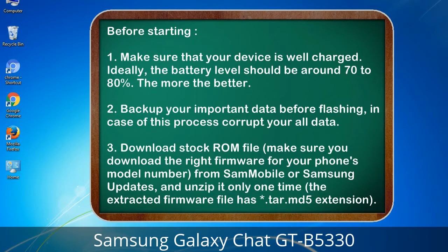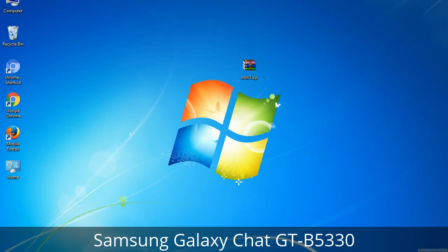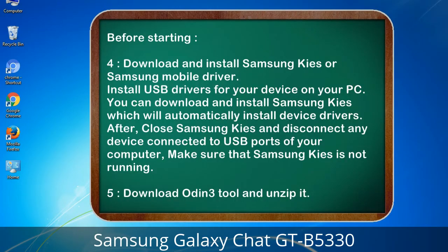3. Download the stock ROM file. Make sure you download the right firmware for your phone's model number from Sammobile or Samsung Updates, and unzip it only one time. The extracted firmware file has a *.tar.md5 extension. 4. Download and install Samsung KIS or Samsung mobile driver to install USB drivers for your device on your PC.